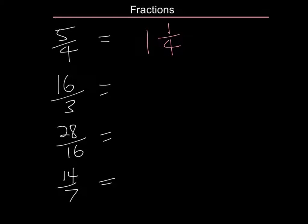For the next one, 16 thirds. 16 divided by 3 goes 5 times because 5 threes are 15 and 1 left over. 5 and 1 third.